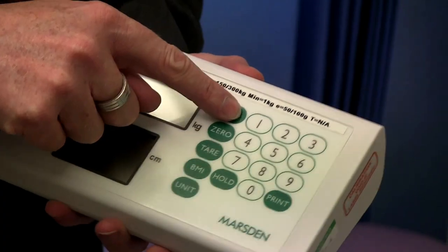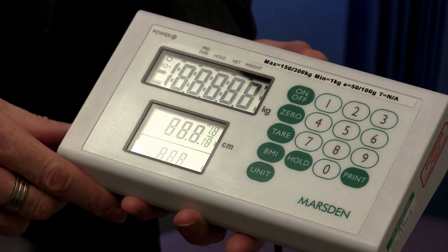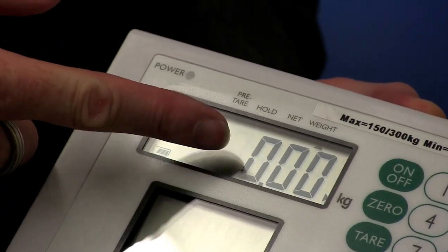So here is how it works. To start, simply press the on-off button. The scale will go through a series of checks and when the three zeros appear, you are ready to start weighing.